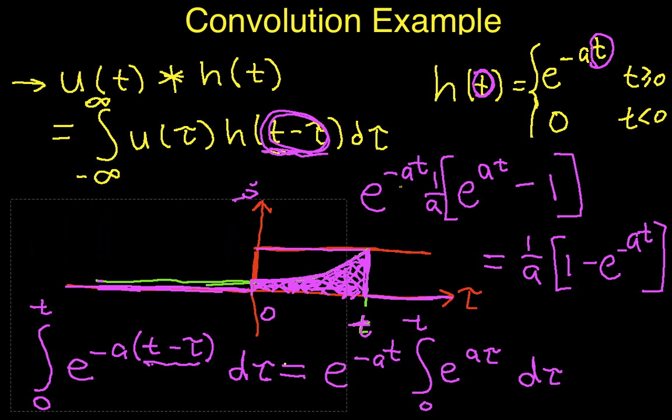For values of t less than zero, the nonzero parts of u of tau and h of t minus tau don't overlap. And so the integral is the integral from minus infinity to infinity of zero, which is zero.